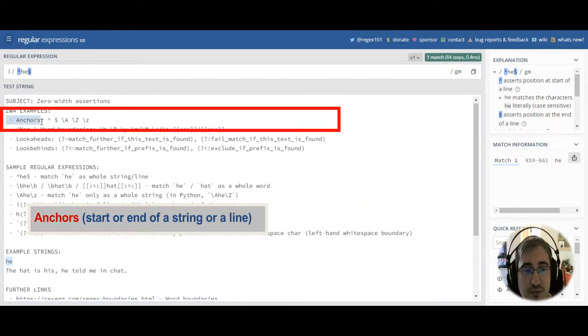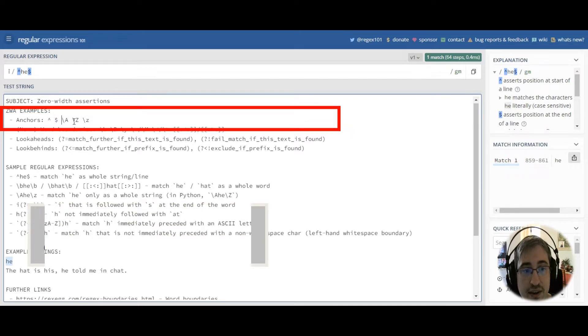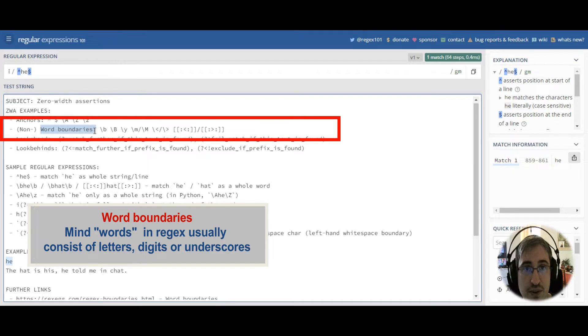Let's take anchors for example. They usually match either start or end of a string or a line. Word boundaries are also considered to be zero-width assertions. Word boundaries usually match locations at the beginning or at the end of a word.